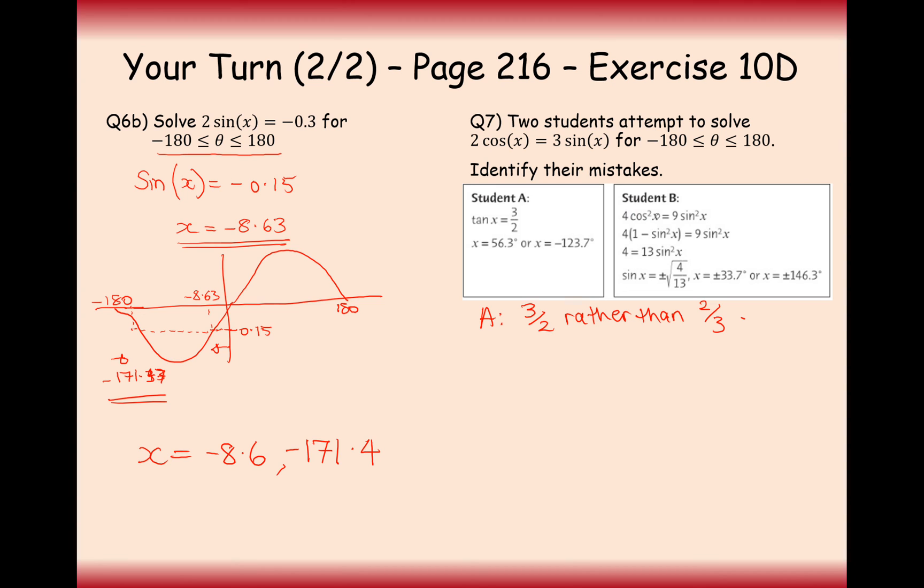Okay, student B here has squared both sides to start with, which is probably their mistake. You should not square both sides. You should not square both sides. Now, why shouldn't you square both sides? Allow me to explain.